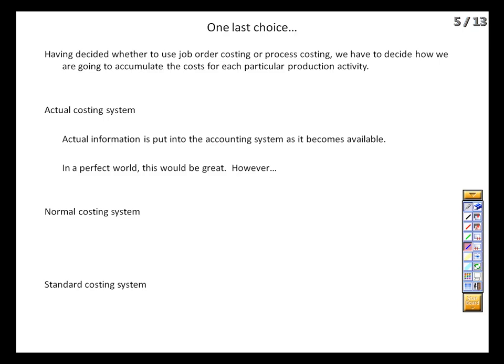Instead, we can use the normal costing system, which alleviates that lack-of-information problem. While we continue to track labor and raw materials in real time using actual data, we use an estimate for overhead costs based on our best guess. We know roughly what the electricity should be given how many hours we ran the machinery, and we know roughly what our taxes will be. We will ultimately true up the costs of the accounting system as the actual bills come in, but in the meanwhile, we do the best we can with estimates.